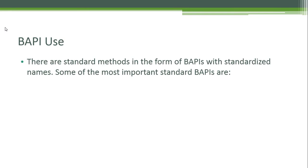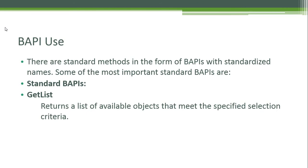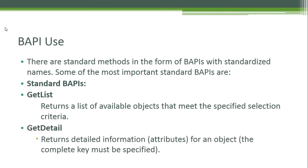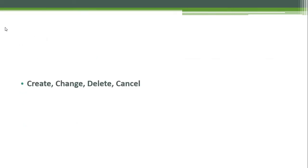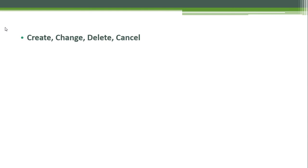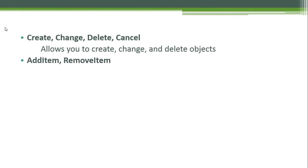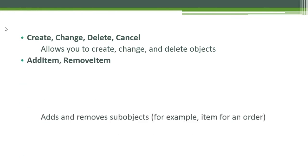There are standard methods in the form of BAPIs with standardized names. Some of the most important standard BAPIs are: GetList, which returns a list of available objects that meet the specified selection criteria; GetDetail, which returns detailed information or attributes for an object where the complete key must be specified; and Create, Change, Delete, and Cancel, which allow you to create, change, and delete objects. AddItem and RemoveItem manage sub-objects, for example items for an order.